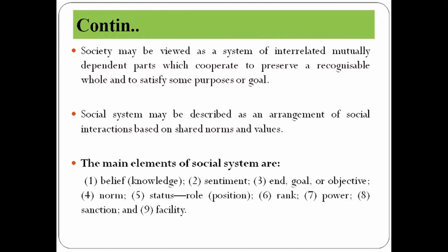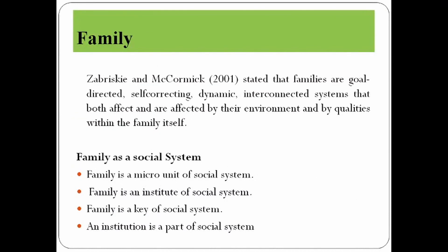There are different elements of social systems: beliefs, sentiment, end goal or objective, norms, status, rank, power, sanction, and facility. Now we are going to discuss about two important social systems: family and religion.